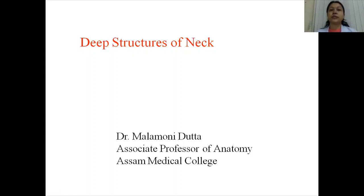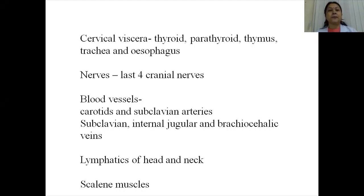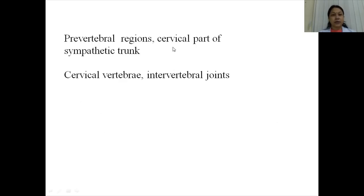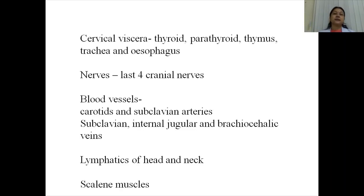Good afternoon, dear students. Today I am going to take a class on deep structures of the neck. By the deep structures of the neck, there are so many structures present, for example the cervical viscera — organs such as the thyroid gland, parathyroid gland, thymus, trachea and esophagus — the last four cranial nerves (9, 10, 11 and 12), blood vessels such as carotids and subclavian arteries, and internal jugular and brachiocephalic veins.